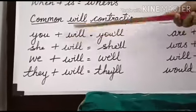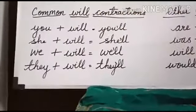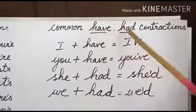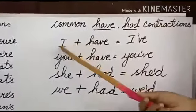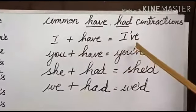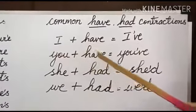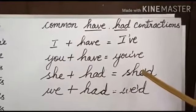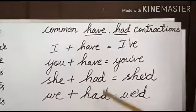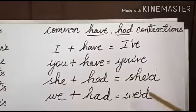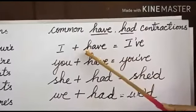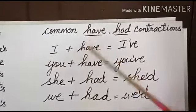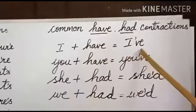Let us see some common 'have' and 'had' contractions. 'I' plus 'have' = 'I've', 'you' plus 'have' = 'you've', 'she' plus 'had' = 'she'd', 'we' plus 'had' = 'we'd'. In these words, the letters 'h' and 'a' are removed and an apostrophe is placed to form the contracted word.